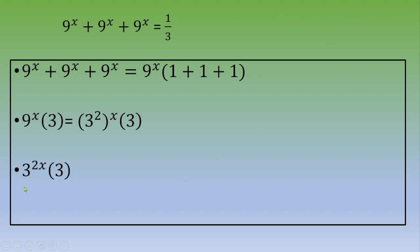Now we've got 3^(2x) times 3. Thanks to this formula a^m × a^n = a^(m+n), we end up with 3^(2x+1).